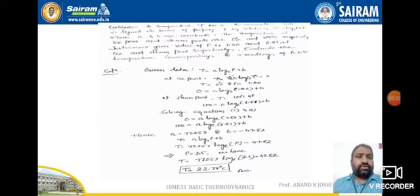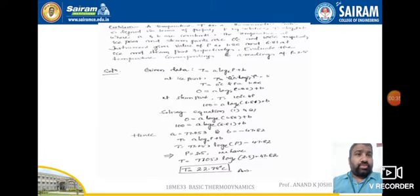Hello friends, welcome to module one. We are solving some problems related to the temperature scale. Here, one problem is given: a temperature T on a thermometer scale is defined in terms of property P by the relation t = a·ln(p) + b, where a and b are constants. The temperature of the scale at ice point and steam point are 0°C and 100°C respectively. The instrument gives the value of P as 1.86 and 6.81 at ice point and steam point respectively.